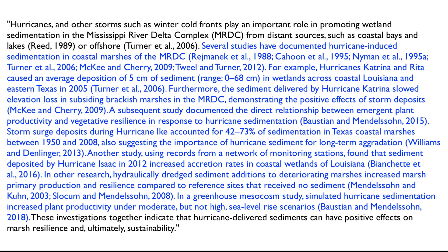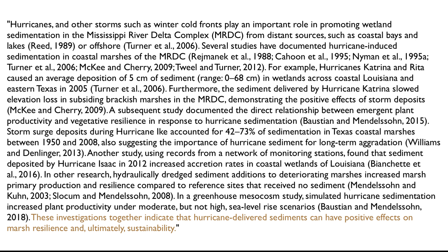Several studies have documented hurricane-induced sedimentation in coastal marshes of the Mississippi River Delta complex. For example, Hurricanes Katrina and Rita caused an average deposition of 5 centimeters of sediment in wetlands across coastal Louisiana and eastern Texas in 2005. Furthermore, the sediment delivered by Hurricane Katrina slowed elevation loss in subsiding brackish marshes in the Mississippi River Delta complex, demonstrating the positive effects of storm deposits. The paragraph concludes with a sentence that explains the significance of the preceding text and ties back to the topic sentence: these investigations together indicate that hurricane-delivered sediments can have positive effects on marsh resilience and ultimately sustainability.